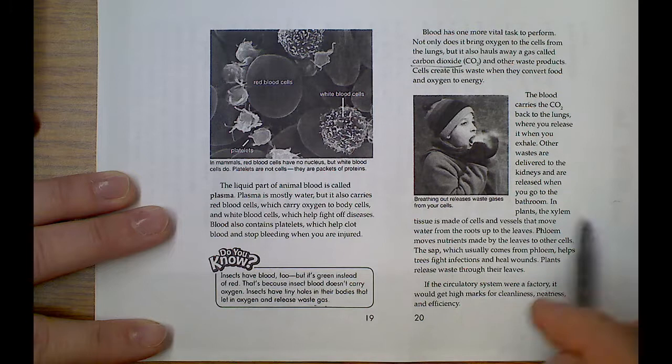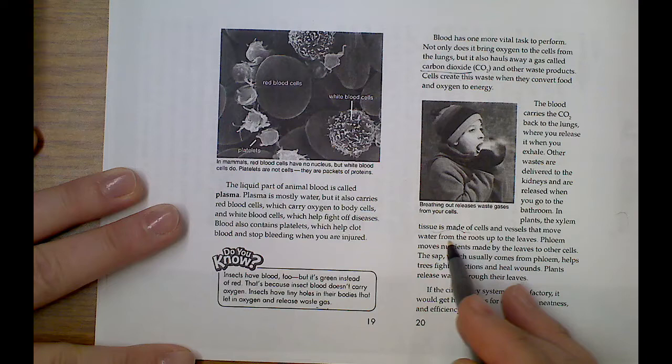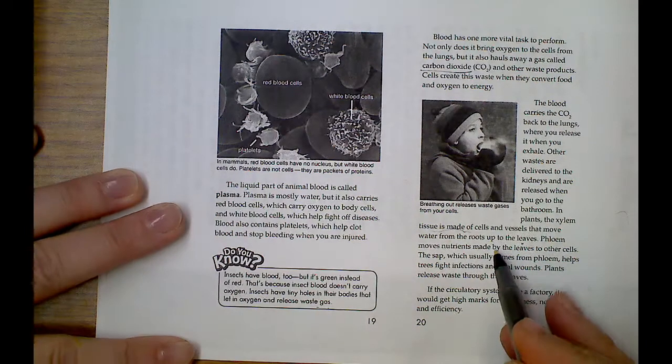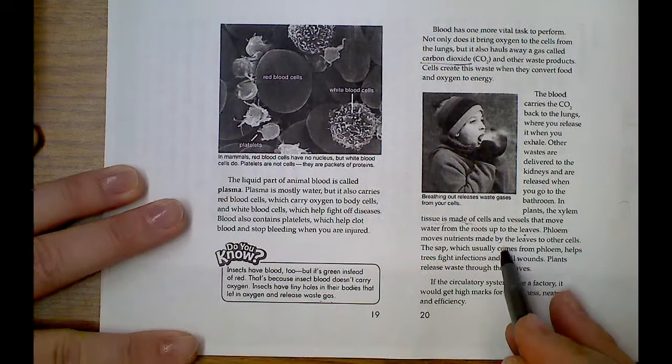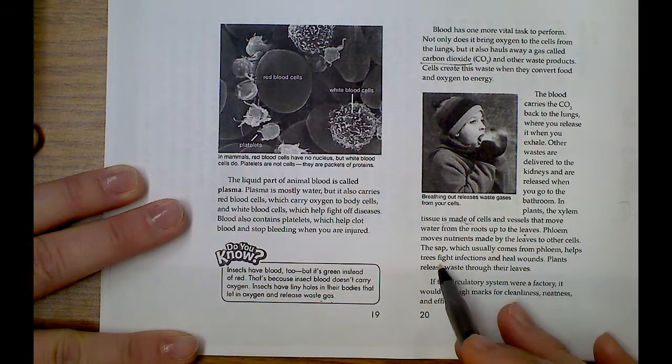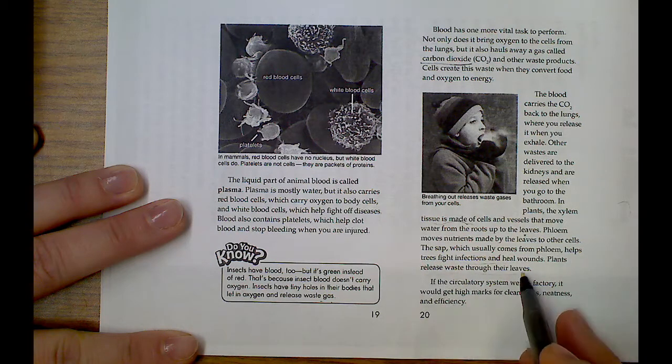In plants, the xylem tissue is made of the cells and vessels that move the water away from the roots and up to the leaves. Phylum moves nutrients made by leaves to other cells. The sap, which usually comes from the phylum, helps trees fight infections and heal wounds. Plants release waste through their leaves.